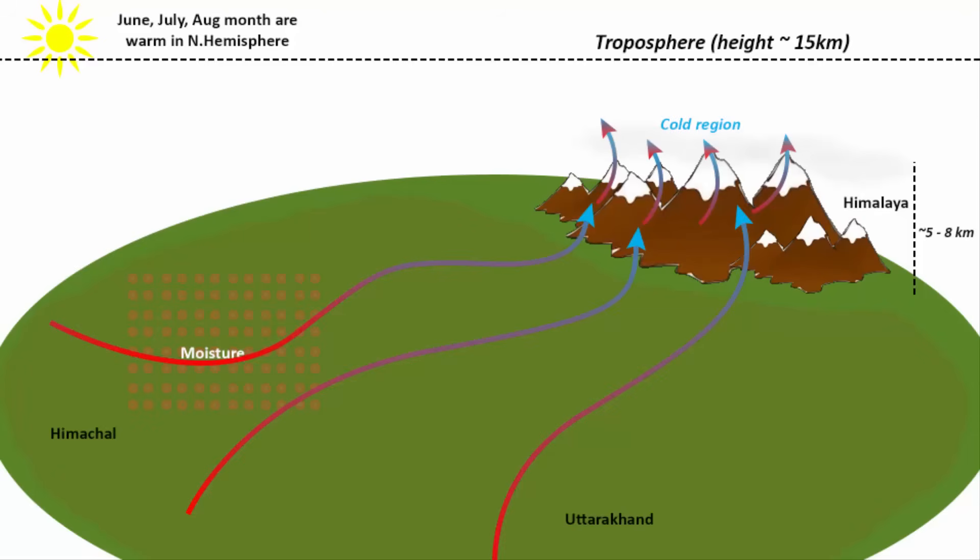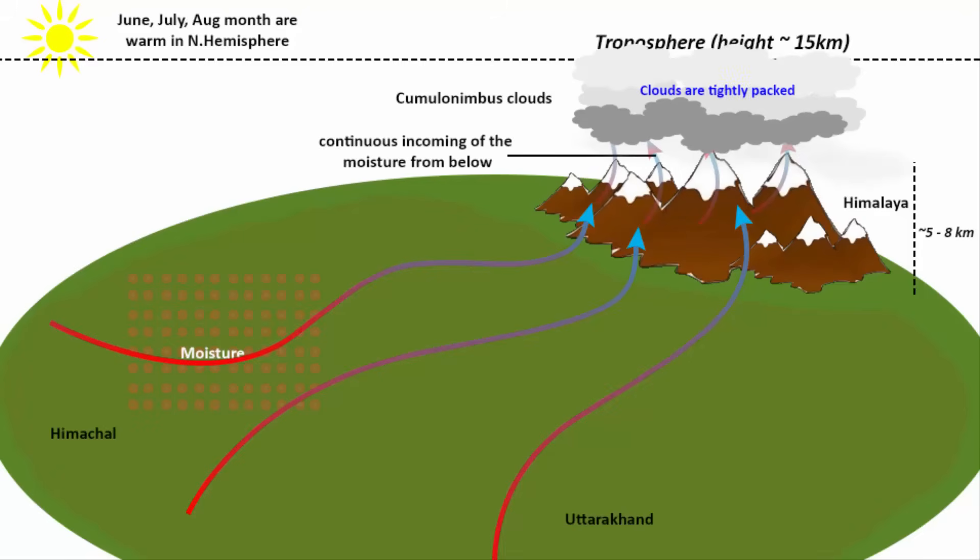When warm air rises upward along the slope of the mountain, warm air then starts to cool because atmospheric pressure decreases with altitude. As the warm air begins to cool, the water vapor present in it starts to condense. Then clouds begin to form. It forms a vertical column of clouds known as cumulonimbus clouds. The reason they are formed in a column is because they are unable to move as quickly as the continuous incoming of the moisture from below. As a result, they start to get tightly packed with each other.